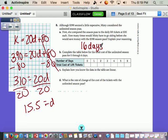Complete the table below for the total cost of the unlimited season pass for 0 through 6 days. She doesn't go any days, she's going to have 390. She's going to pay 390, she doesn't go any days, it doesn't matter. She's paying for the season tickets. And she goes one day, still 390. 2, 390 still. 3, 390. I think you see where I'm going with this. 4 is 390, 5 is 390, and 6 is 390. Because once she pays that, she can go as many times as she wants.